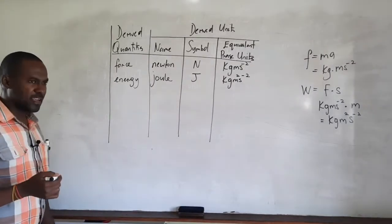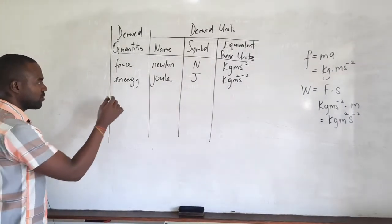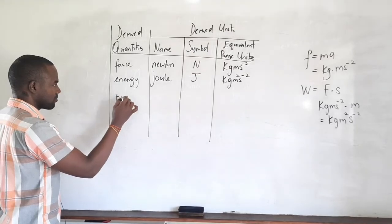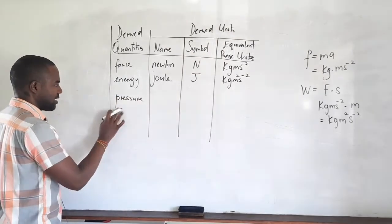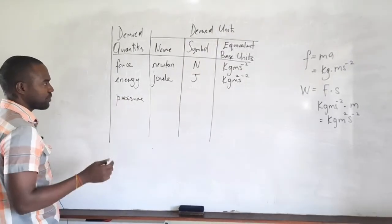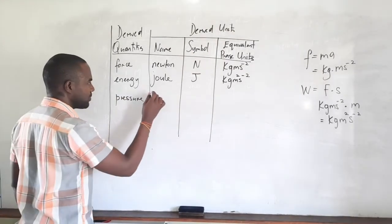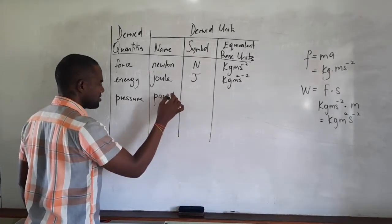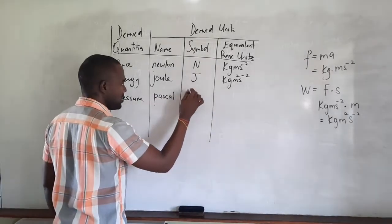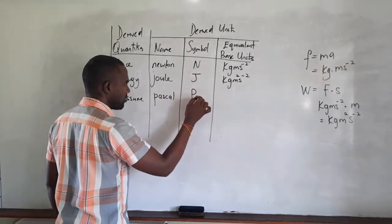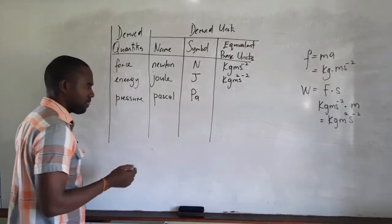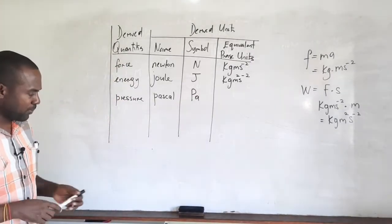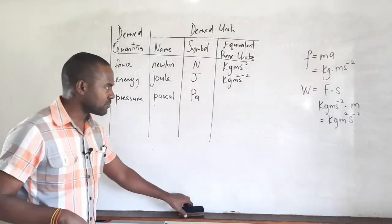The next quantity is pressure. The SI unit of pressure is the pascal, whose symbol is Pa — an uppercase P followed by lowercase a.